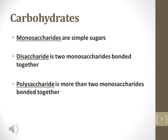Monosaccharides are monomers and are the simplest form of carbohydrates. Disaccharides are two monosaccharides covalently bonded together. Polysaccharides are many monosaccharides covalently bonded together. To help you remember this, recall that the prefix mono means one, di means two, and poly means many.